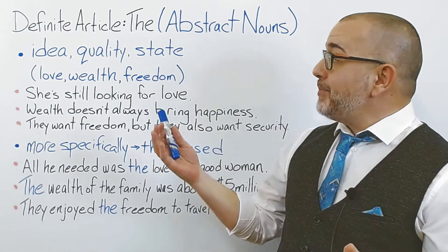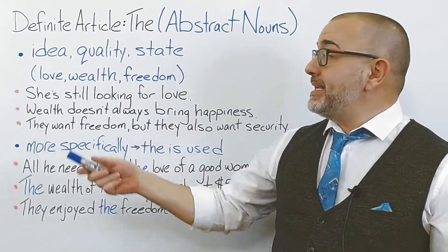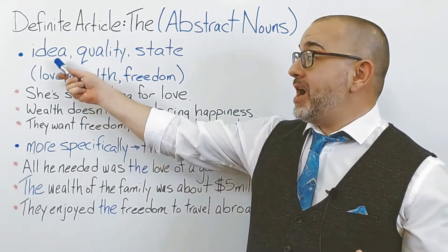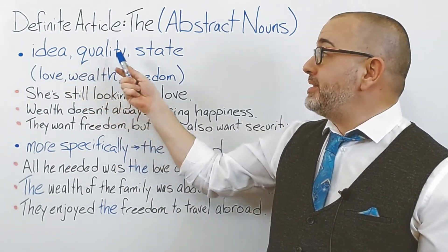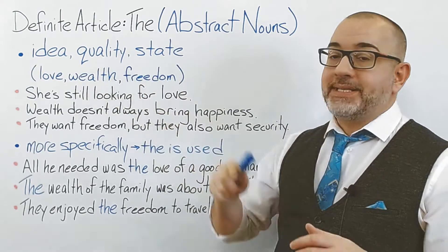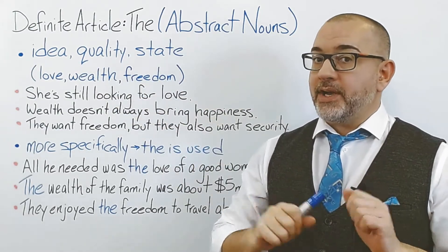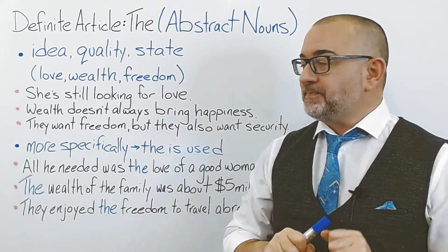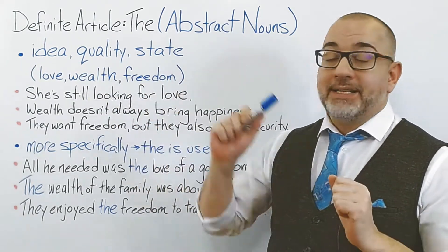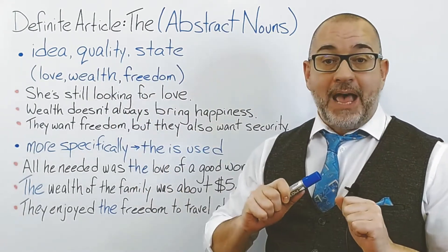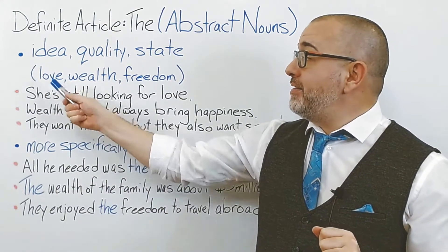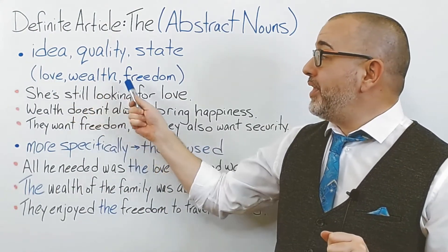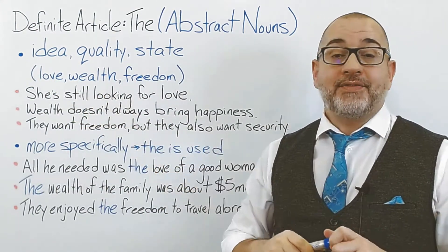An abstract noun is something that describes an idea, a quality, or a state — not something concrete. Some examples of abstract nouns are love, wealth, and freedom.